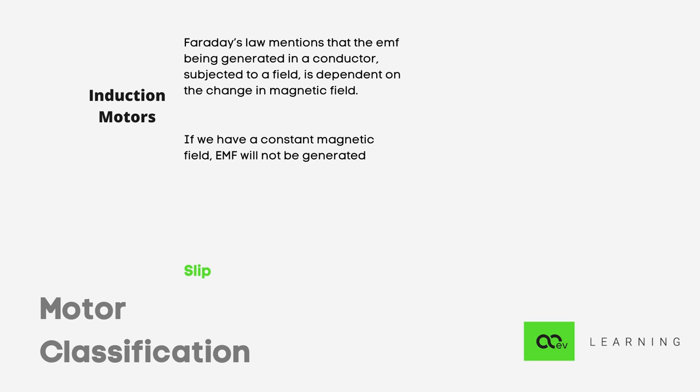If we have constant magnetic field, EMF will not be generated. In a hypothetical case of a motor's rotor running at a speed equal to that of the RMF, any particular section in the rotor will not experience any change in magnetic field as there is no relative motion. Thus, no EMF will be induced and no current will flow. No motion is possible. The rotor will not experience any torque. It will start to lag behind the speed of the RMF.